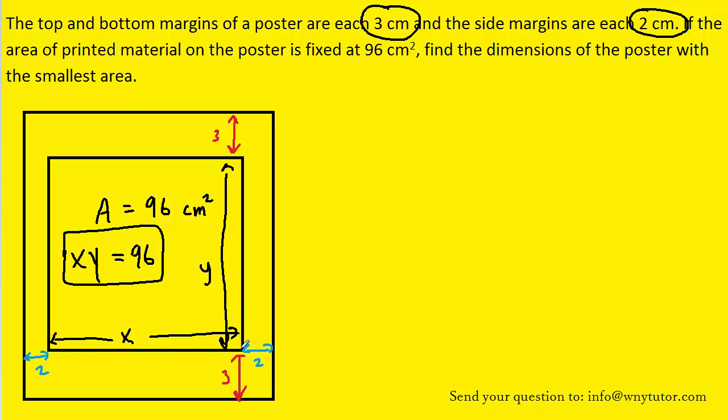Given the fact that we had labeled this dimension x, hopefully it's pretty clear that the actual width of the entire poster is going to be that x plus the 2 inches on the left margin plus the 2 inches on the right margin, or a total of x plus 4. So let's label the width of the whole poster x plus 4.